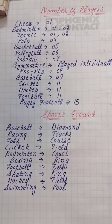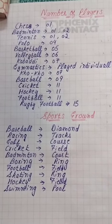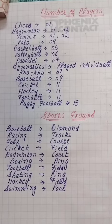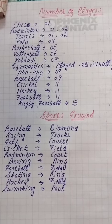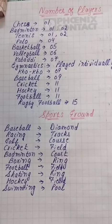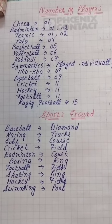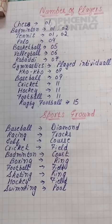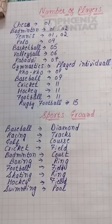Now, sports grounds. In baseball, the ground where baseball is played is called a diamond. Racing is done on a track. Golf is played on a course. Cricket is played on a field.